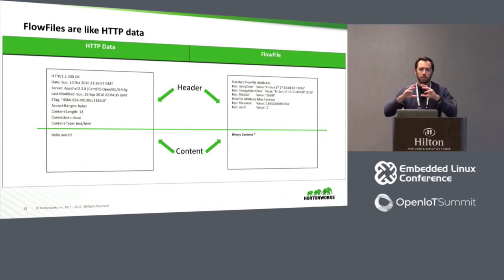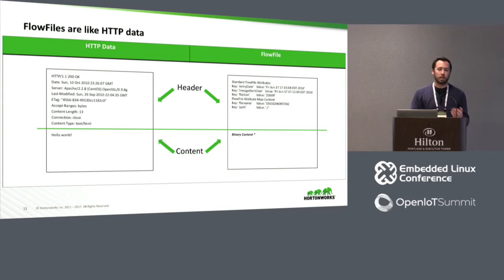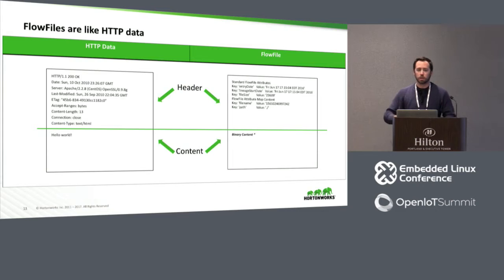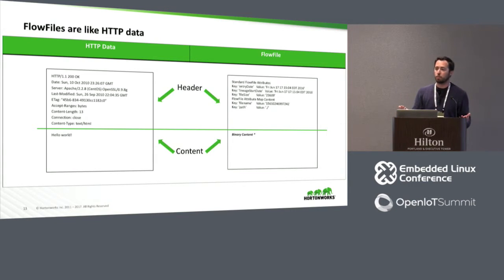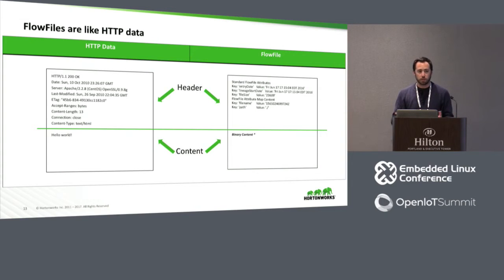One of the best analogies for the flow file construct is to think about HTTP data. When you make an HTTP request or response, there are attributes — headers — which are usually key-value pairs. Then you have content: binary content that could be HTML text, a video, JSON. Same thing with our flow file: it has attributes, which are small in-memory key-value pairs, and then binary content. This is arbitrary — it could be zero bytes, it could be gigabytes of data, video, or output from large industrial machines and ICS systems. It can vary greatly not only in size but in internal format and construct.